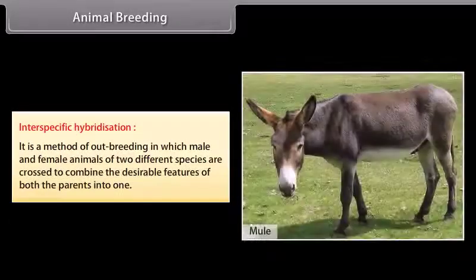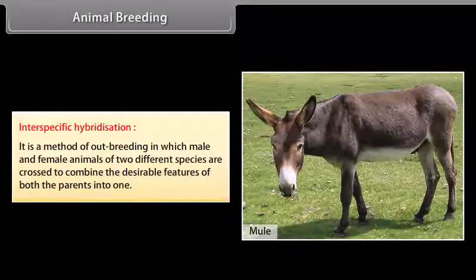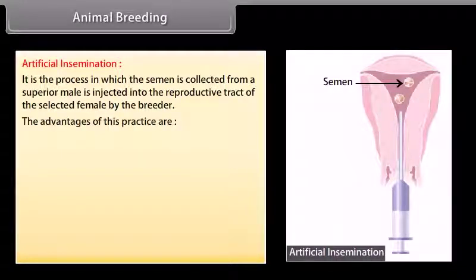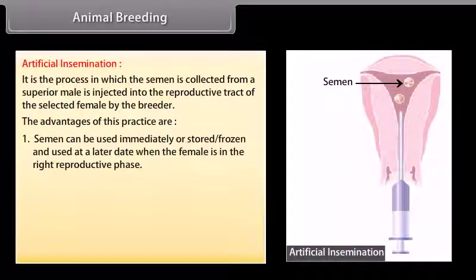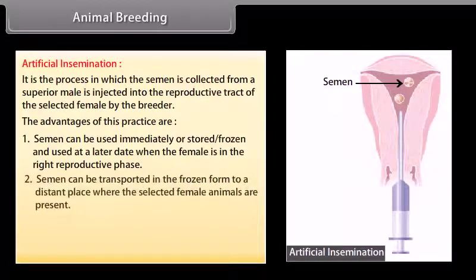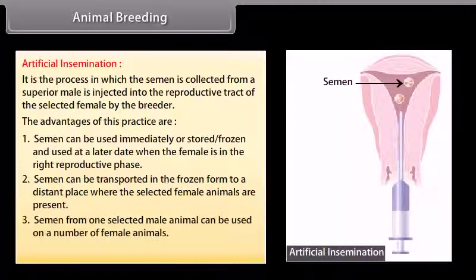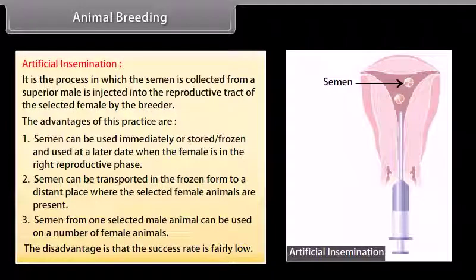Interspecific hybridization is a method of outbreeding in which male and female animals of two different species are crossed to combine desirable features of both parents. For example, a mule is produced by a cross between a male donkey and a female horse. Artificial insemination is the process in which semen collected from a superior male is injected into the reproductive tract of a selected female. Advantages include: semen can be stored or frozen for later use, transported to distant locations, and used on multiple females. The disadvantage is that the success rate is fairly low.